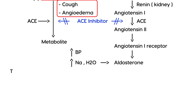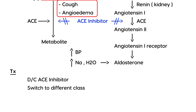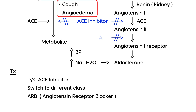So how do you treat this? If it does indeed happen, you have to discontinue the ACE inhibitor and switch to a different class of medication. One very common class prescribed in this scenario is an ARB — angiotensin receptor blocker. The ARB blocks the angiotensin receptor step but doesn't interfere with the bradykinin pathway, so it doesn't lead to cough the way an ACE inhibitor would.